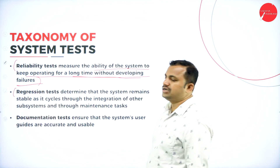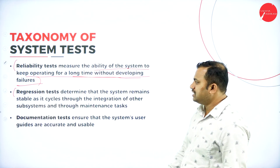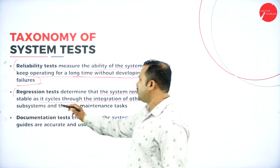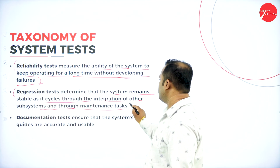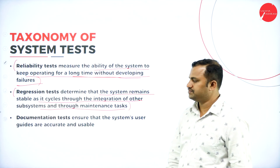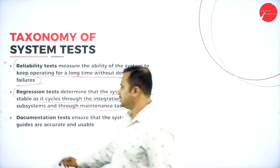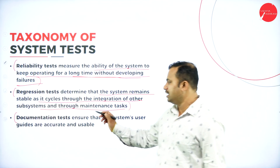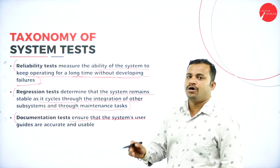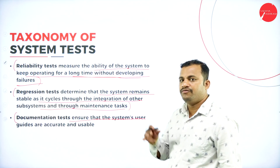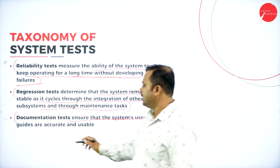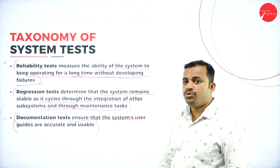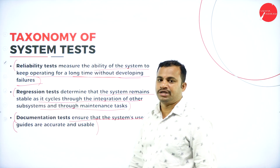Then we have regression tests. These regression tests determine that the system remains stable as it cycles through the integration of other subsystems and through maintenance tasks. Then we have documentation test — it ensures that the documentation of the user requirements is met by the developer, and accurate guidelines are given to the stakeholder who uses the system.